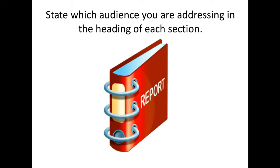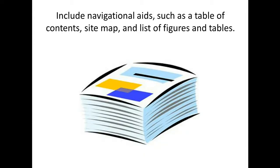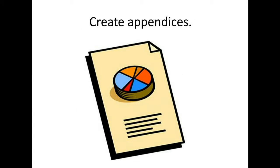You can organize content at a beginner level and a more advanced level. You can create modules that allow your reader to skip sections if they are more expert. You can include navigational aids such as a table of contents, a site map, and a list of figures and tables. You can also create appendices.